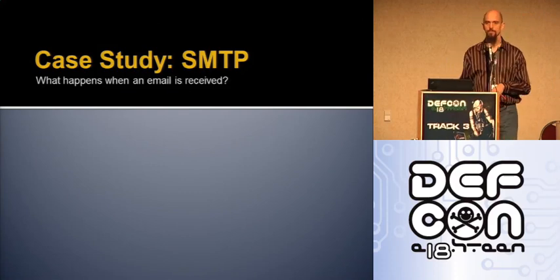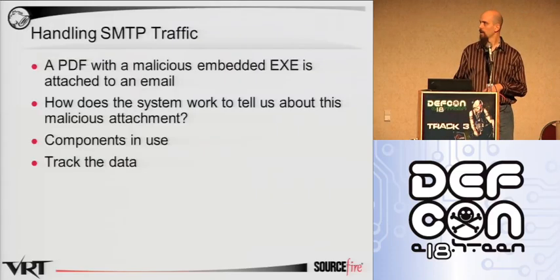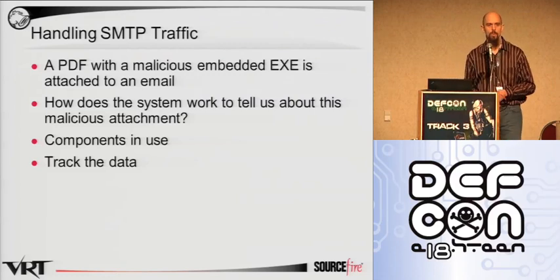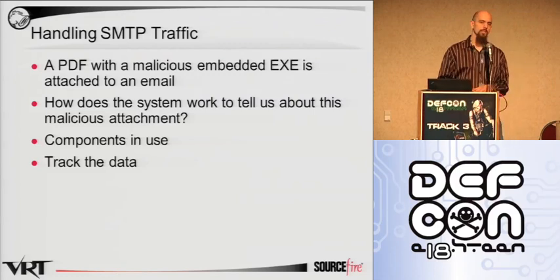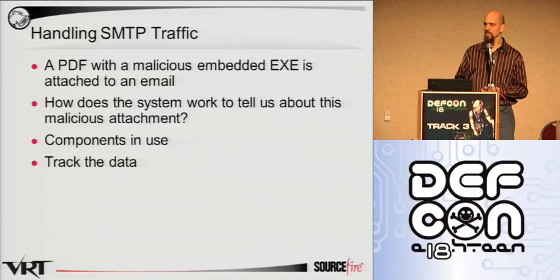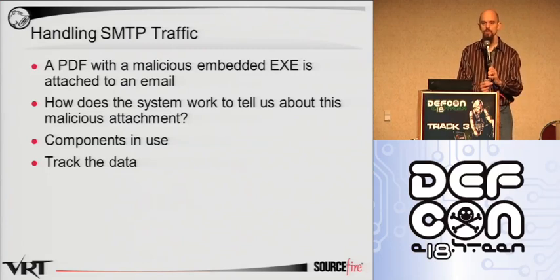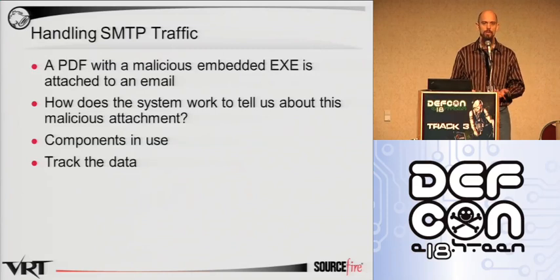What we're going to do for this example is SMTP traffic. We have a PCAP, and that PCAP is an email — SMTP traffic where somebody is sending an attachment that is a PDF that has an embedded EXE file, and that EXE file contains a Trojan. I really wanted to take the opportunity to show how we can have multiple pieces, each one doing its own special part and providing an alert from that.